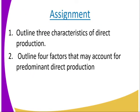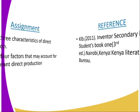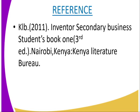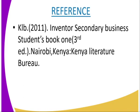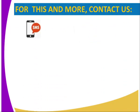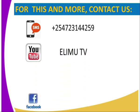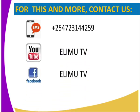Assignment: outline three characteristics of direct production, then outline four factors that may account for predominant direct production. Reference: KRB 2011, Inventor Secondary Business Studies Student Book One. If you have any questions, you can send them via SMS, YouTube, Facebook, or Twitter. Stay tuned to Arim TV. Thank you.